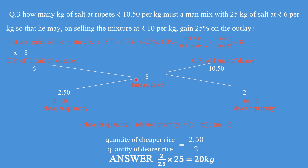10.50 minus 8 gives 2.50, and 8 minus 6 gives 2. Filling into the standard form, quantity of cheaper commodity upon quantity of dearer commodity is 2.50 upon 2. Now you are not being asked the ratio — you are asked how many kg of salt at rupees 10.50. So the expensive quantity must be calculated. If the cheaper is 2.50 then the expensive is 2 from the ratio. Applying the unitary method: given 25 kg of cheaper salt, quantity of dearer is 2 upon 2.5 multiplied by 25, which gives 20 kg.